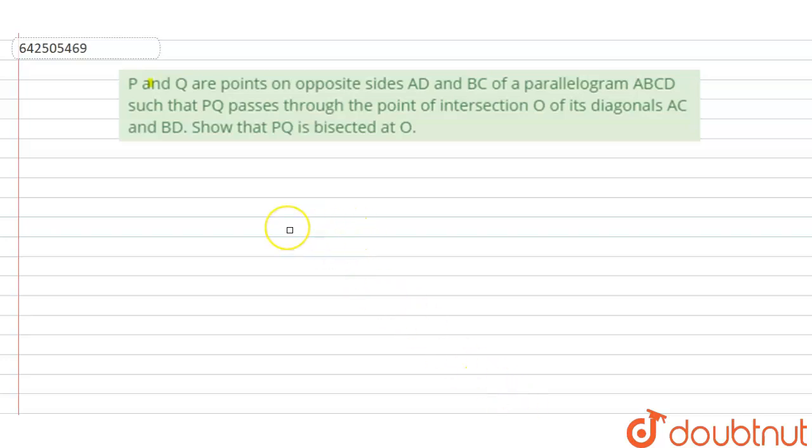Hello everyone, let's start the question. Question says that P and Q are points on opposite sides AD and BC of a parallelogram ABCD such that PQ passes through the point of intersection O of its diagonals AC and BD. Show that PQ is bisected at O.